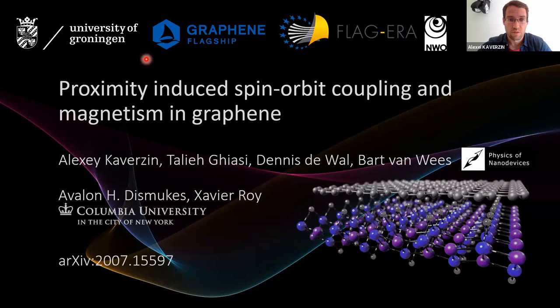They grow chromium sulfide bromide, send it to us, and then we exfoliate it and make heterostructures and then spintronics devices. On the bottom, you see the link to the archive preprint that appeared just last week.